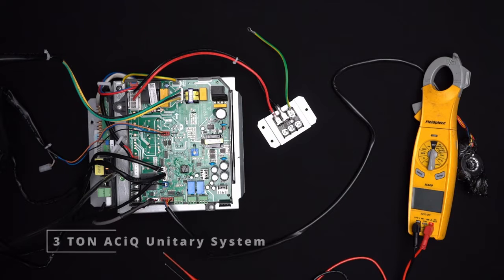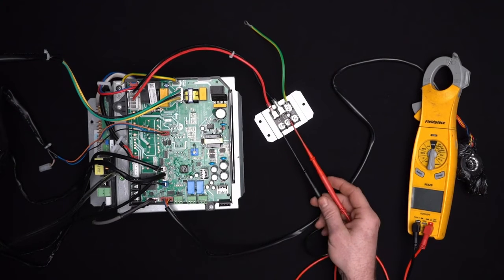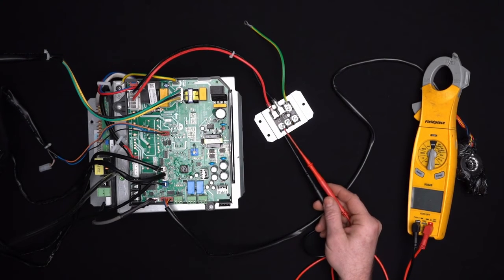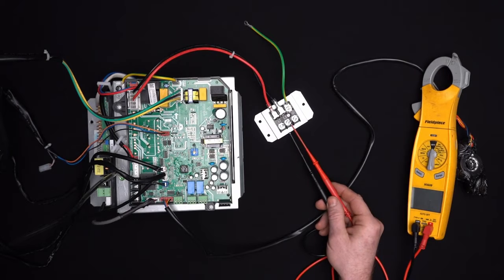This is the board for the air handler. We're going to start at our L1, L2, our supply voltage. L1 obviously going to be L1, L2 obviously going to be L2, and then ground.